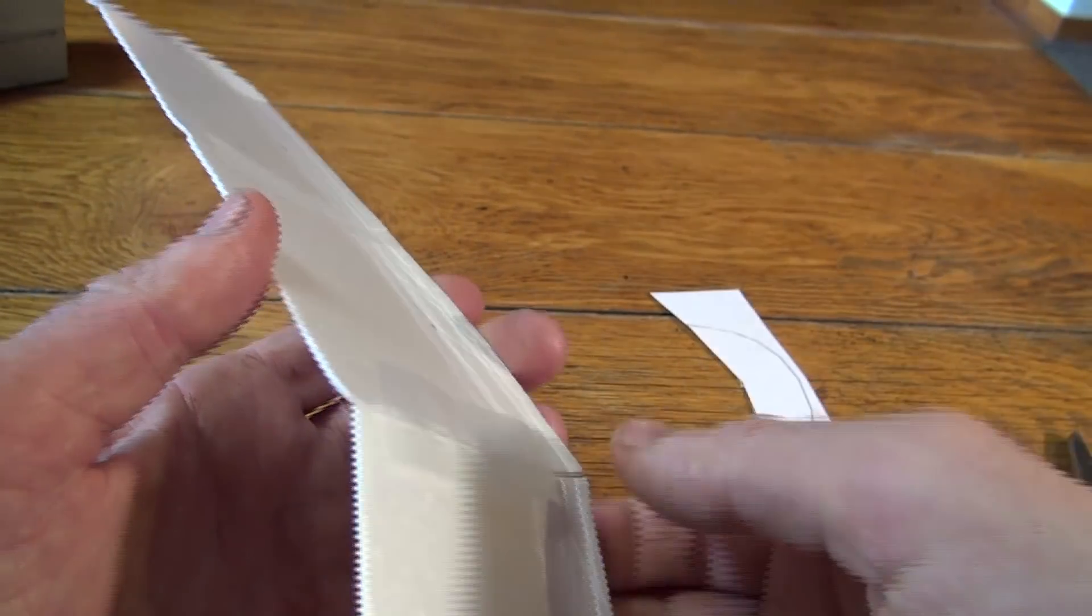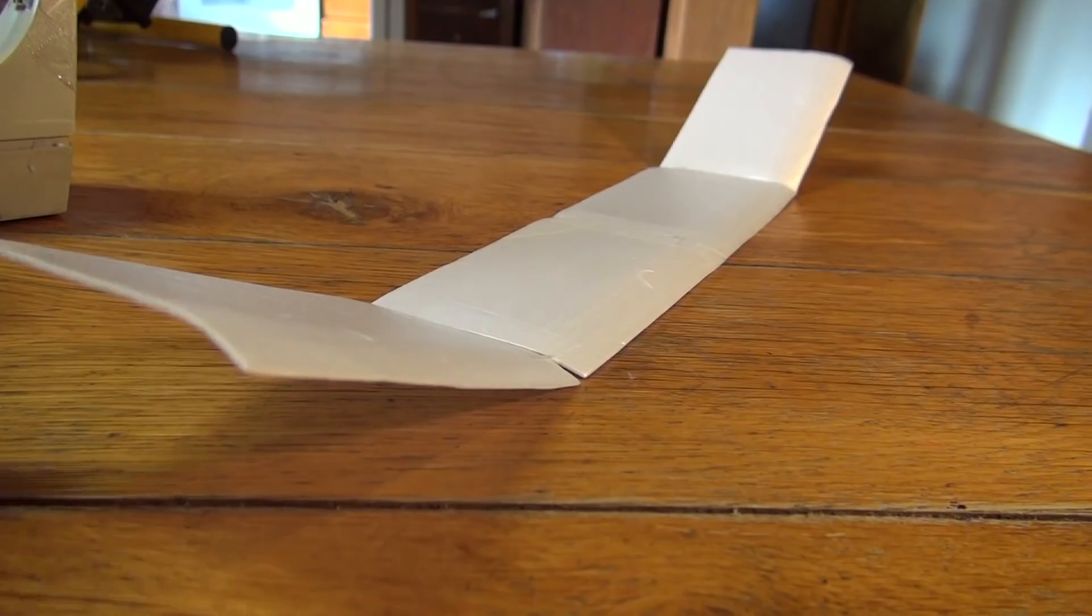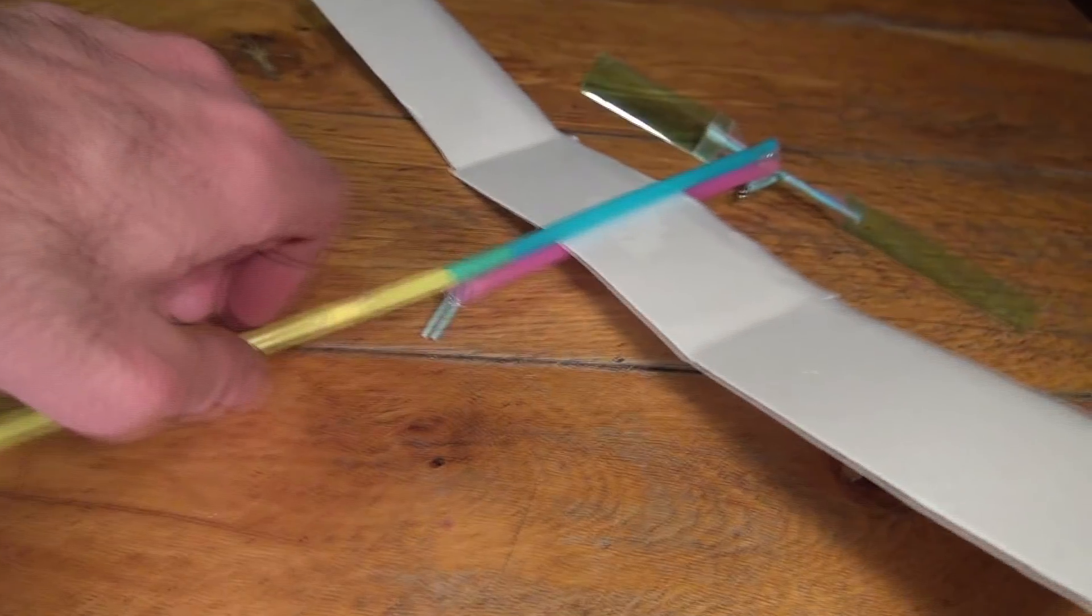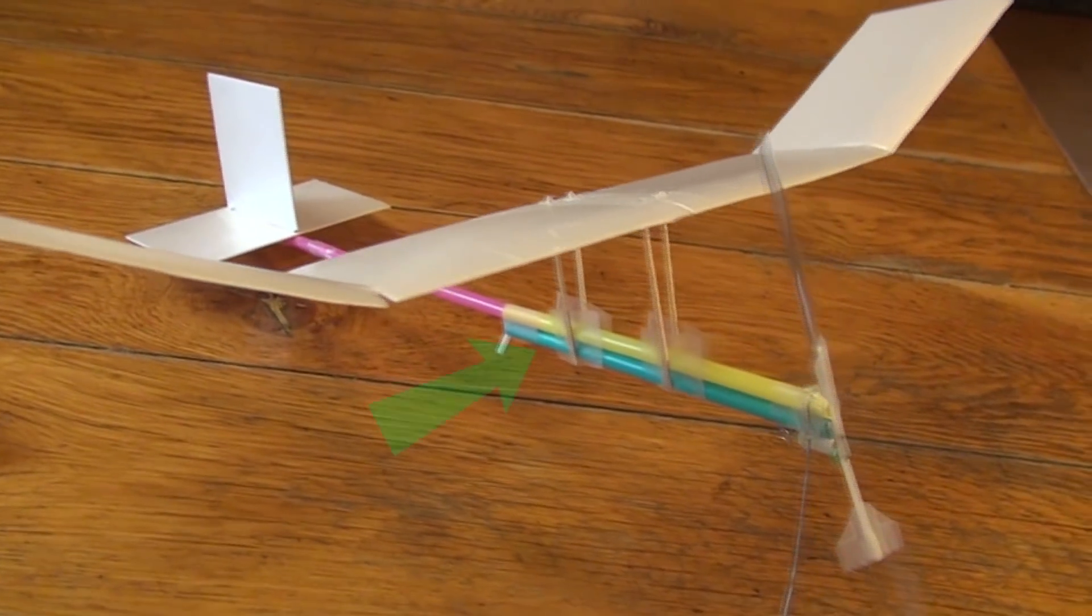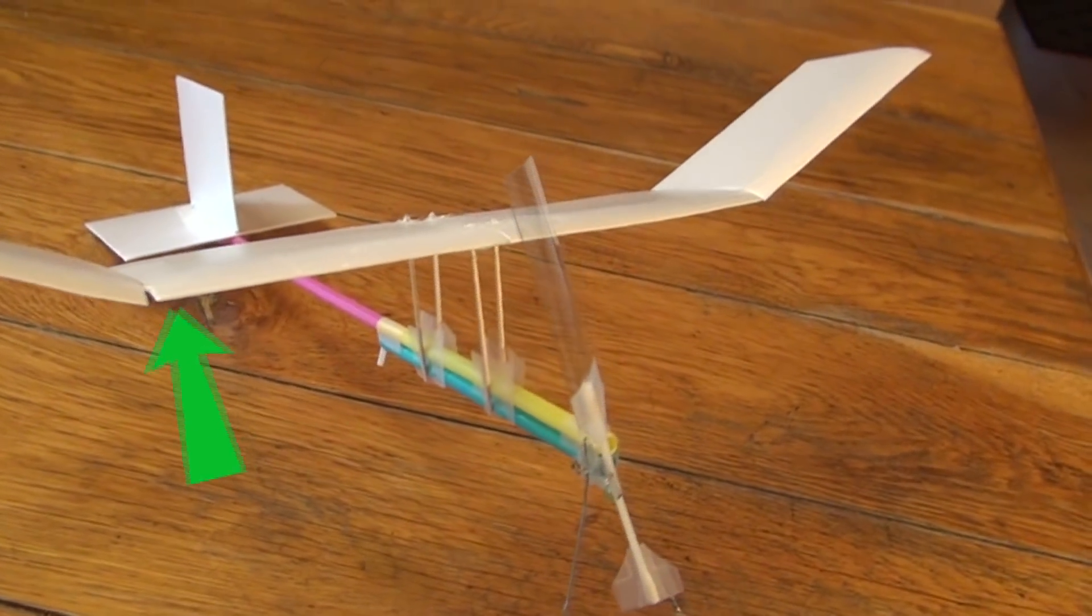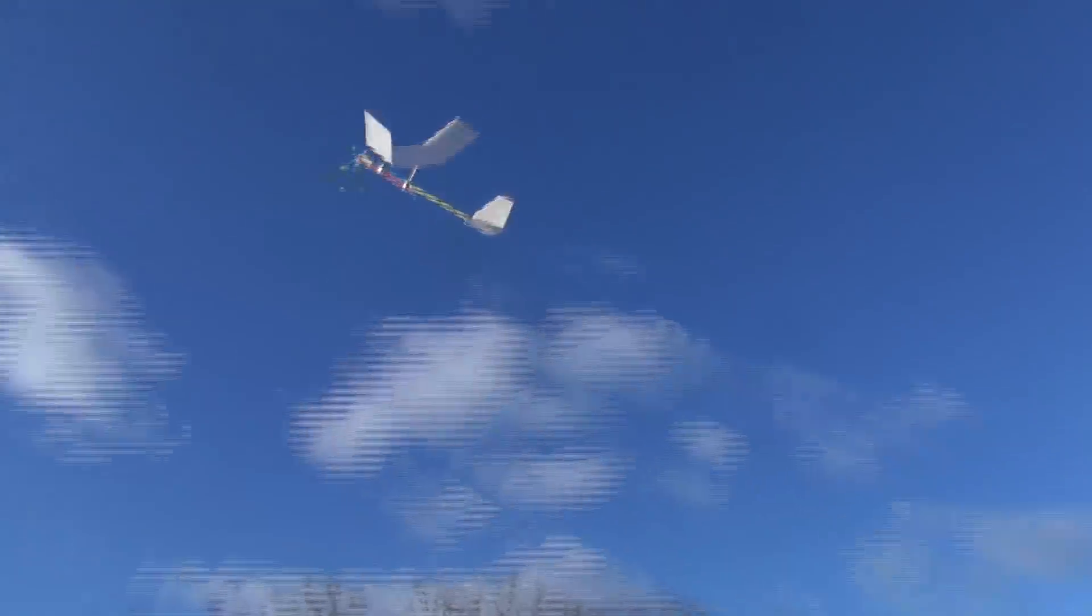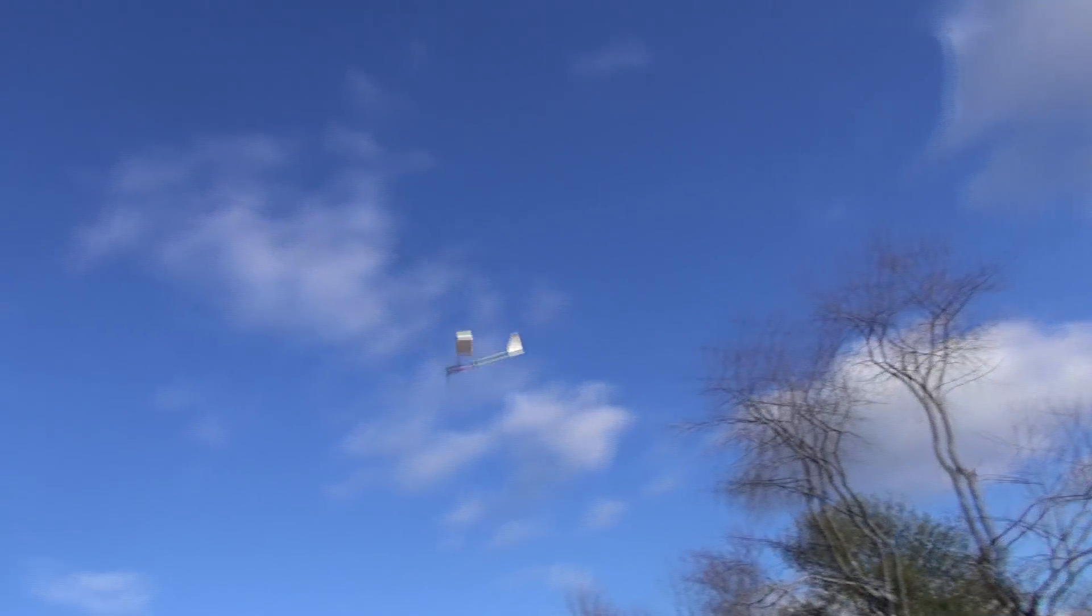Only then do I put tape on the bottom. It's tempting to just hold the wings in between the straws, and I've tried it. But the old trick of hanging the fuselage well below the wings is yet another way to gain flight stability. Worth the extra hassle, in my opinion.